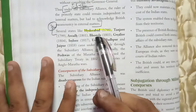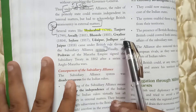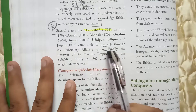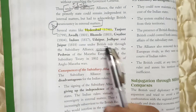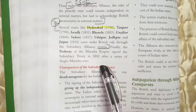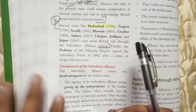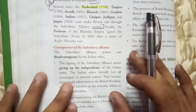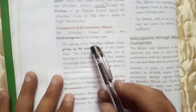Under the Subsidiary Alliance system, several states came under British rule, including Hyderabad, Tanjore, Awadh, Bhonsle, Gwalior, Indore, Udaipur, Jodhpur, and Jaipur. The first state to enter this alliance was Hyderabad.